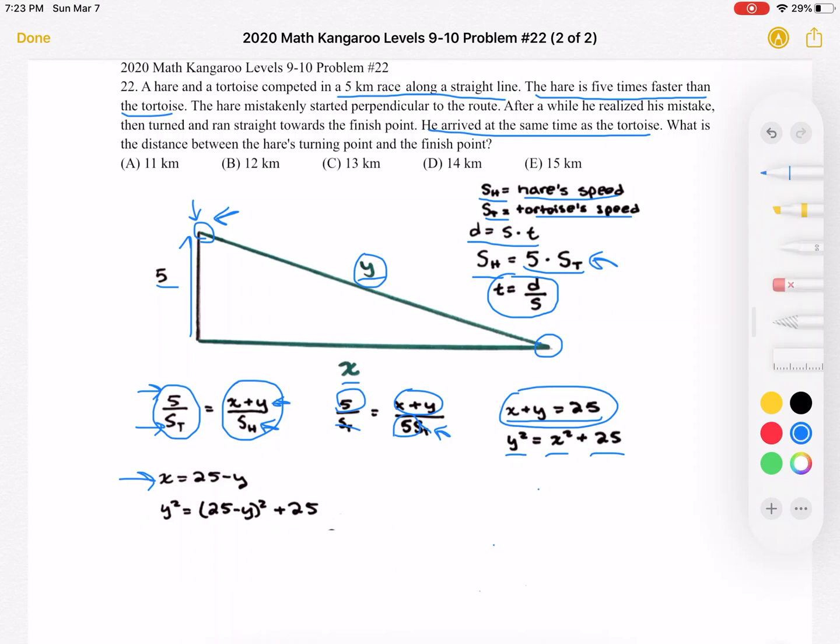Now we're substituting. So right here we had X squared. Instead of X squared, we're going to rewrite that as quantity of 25 minus Y squared, because we just want one variable to solve for Y.